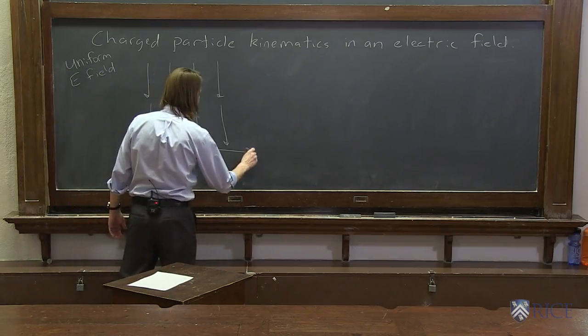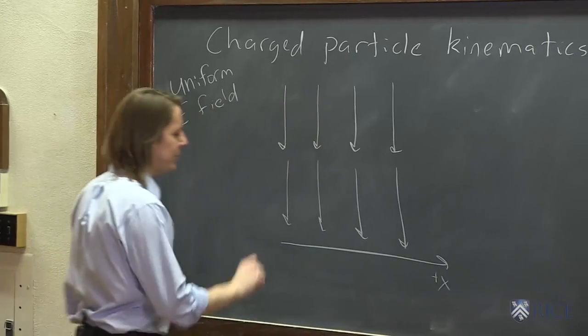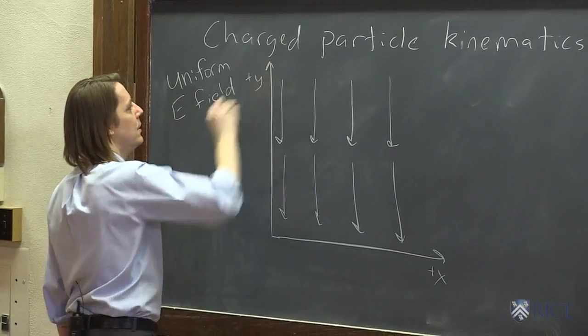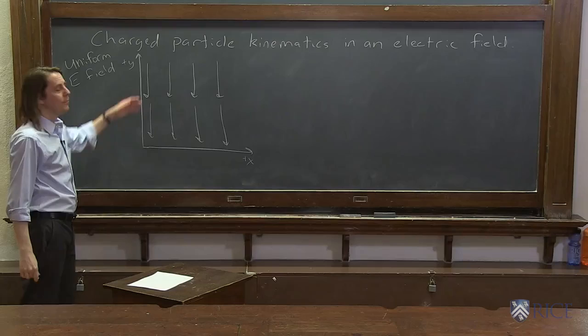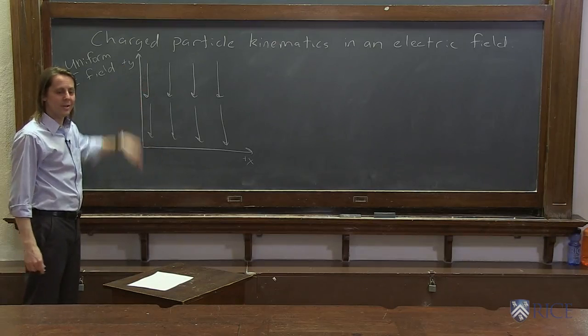Let's put some axes on it here. We'll say that's in the x direction, and this is in the plus y direction. So this is a uniform field pointing down in the y direction.